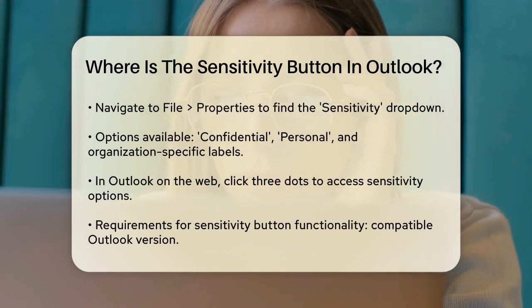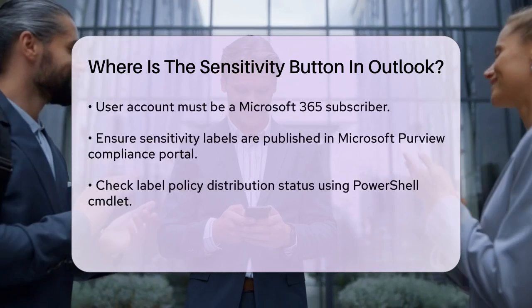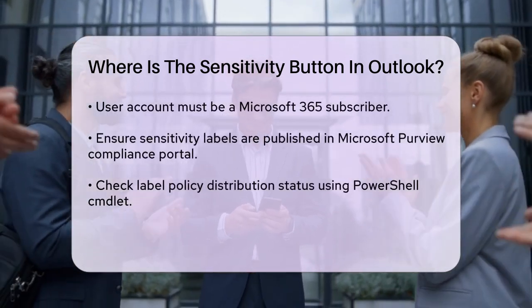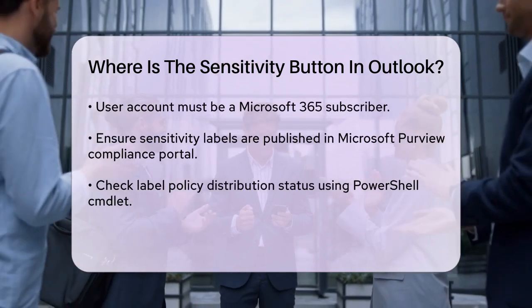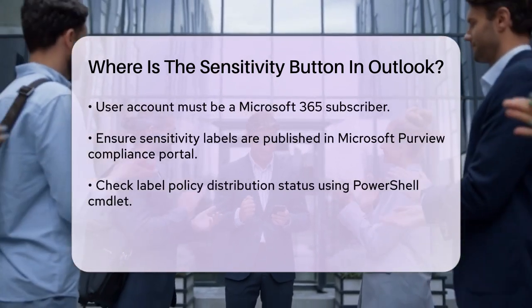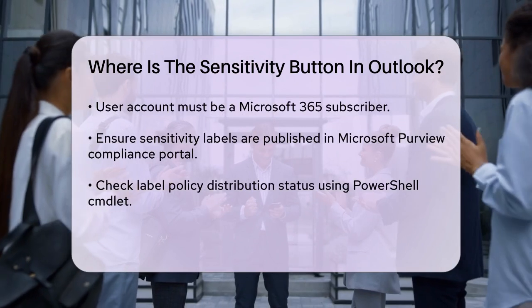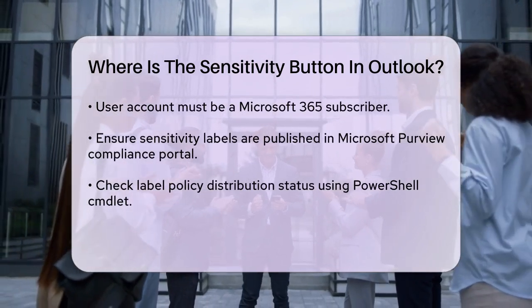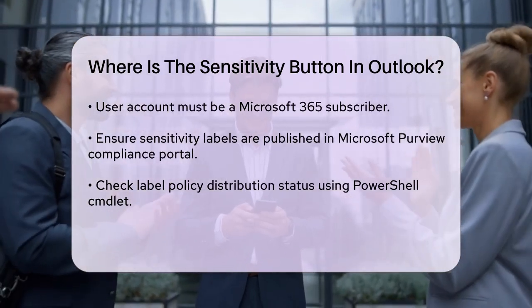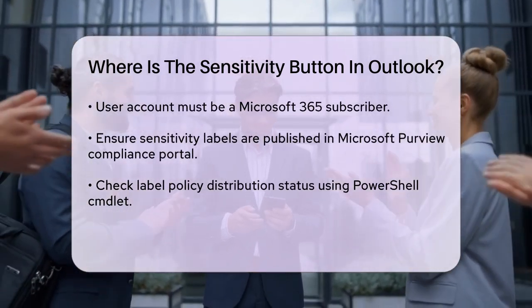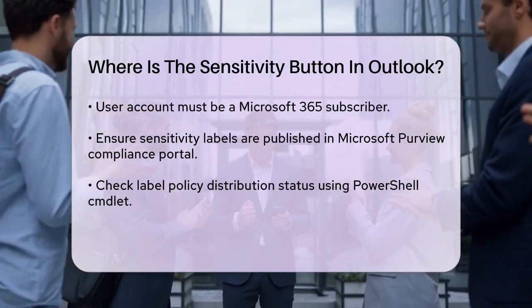Next, verify that the user account signed into Outlook is a Microsoft 365 subscriber. Also, make sure that the sensitivity labels are published in the Microsoft Purview compliance portal and that the label policy distribution is successful. You can check this using a PowerShell cmdlet to see if the distribution status is Success.